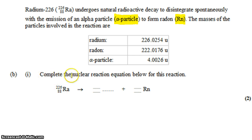We just want to complete the nuclear reaction equation below. Radium-226 becomes something and some isotope of radon. Well, they told us what it becomes. It becomes radon and an alpha particle. So the other thing is that alpha particle.